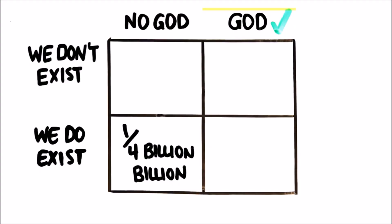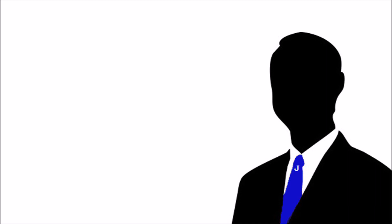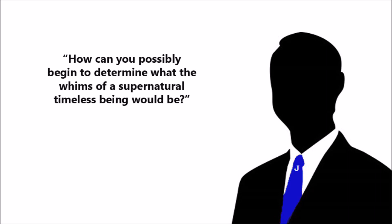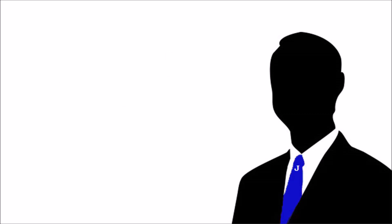And if God is real, even though we don't know that God would make humans, certainly he could. So let's give it a higher probability of 1 in 4 million. How did you determine that? How can you possibly begin to determine what the whims of a supernatural timeless being would be? As a side note, considering how poorly designed humans are, I actually think it would be incredibly unlikely for a God to have made them.